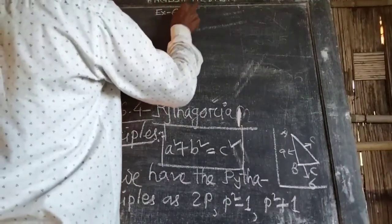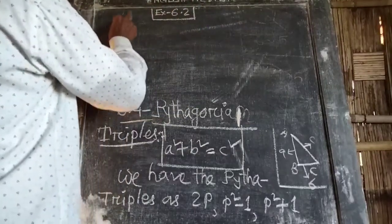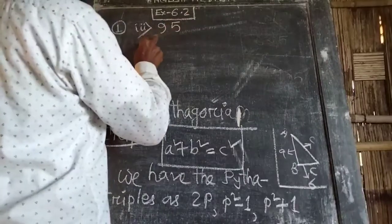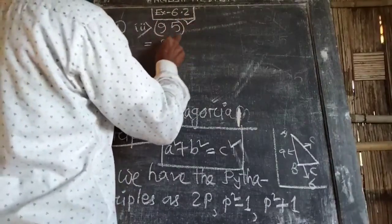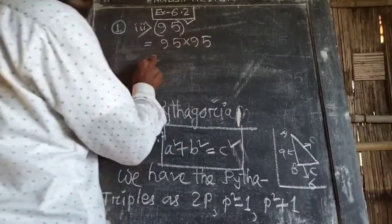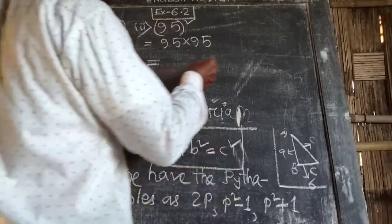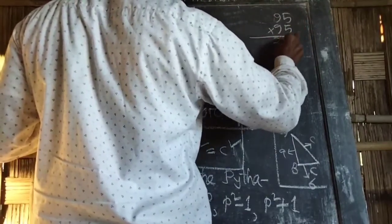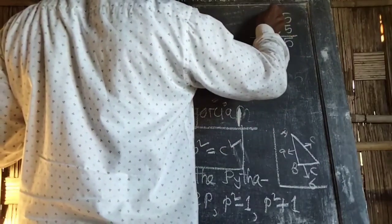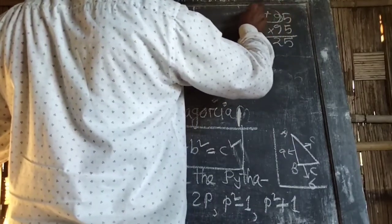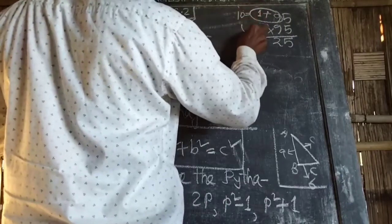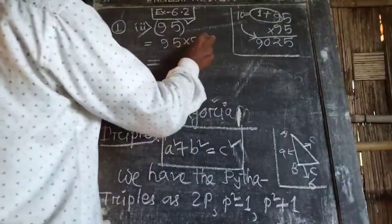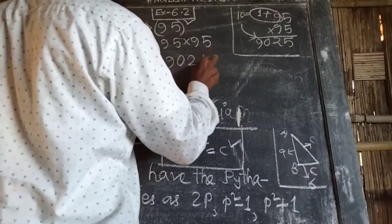Question 1: Find 95 squared. 95 into 95: 5 into 5 is 25, write directly. Adding: 9 plus 1 equals 10. Multiplying 10 into 9 is 90. So 95 squared equals 9025.